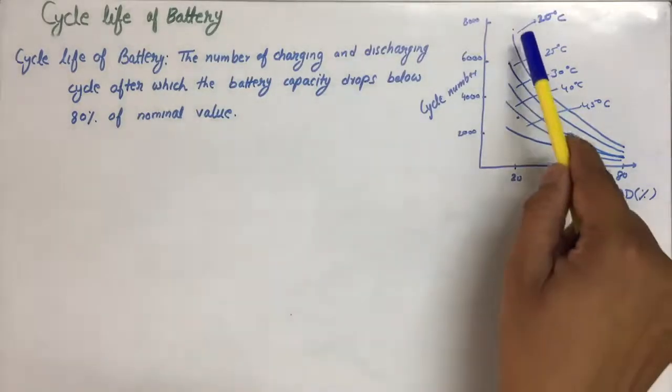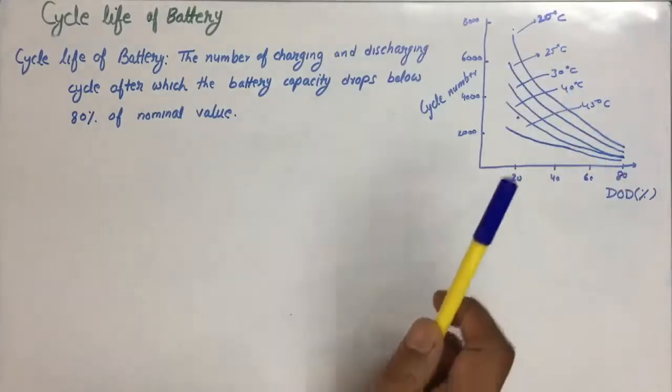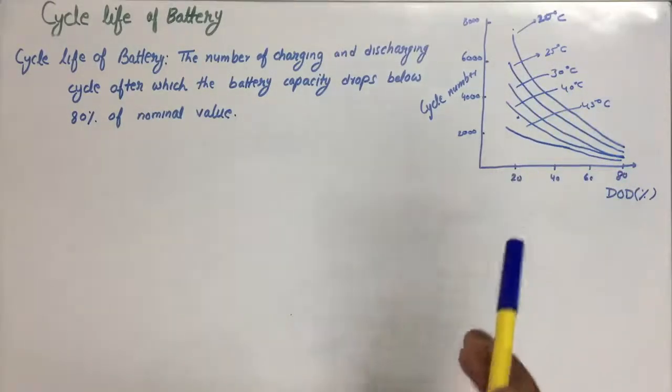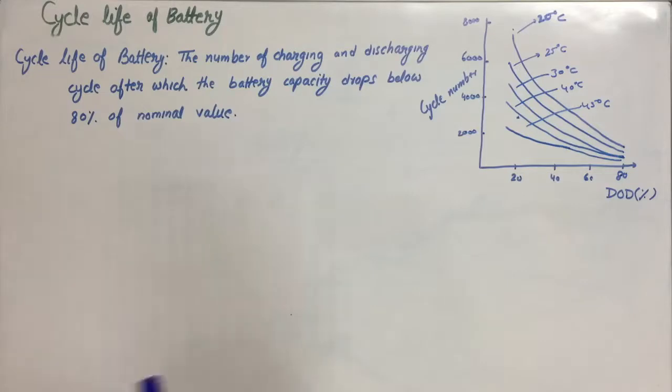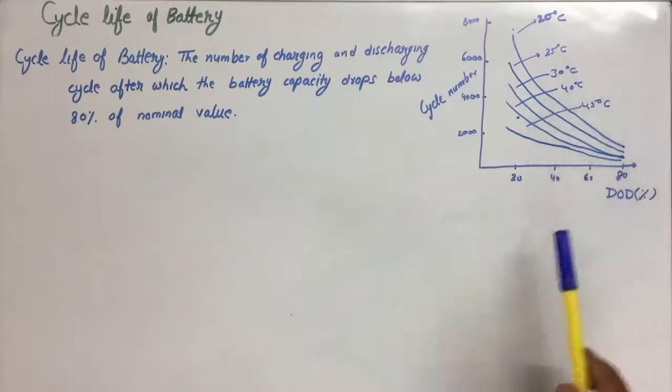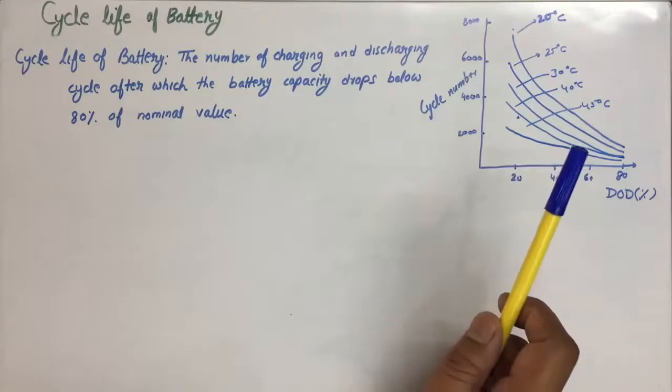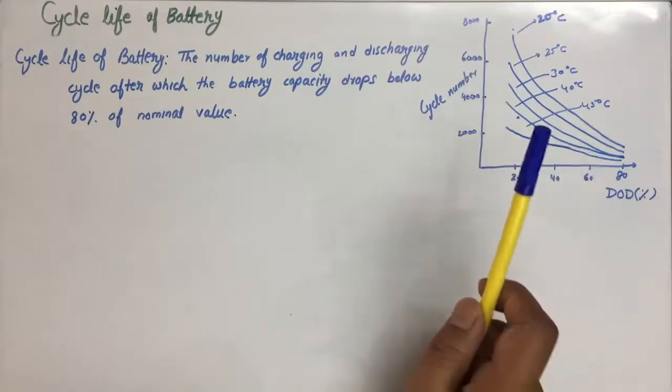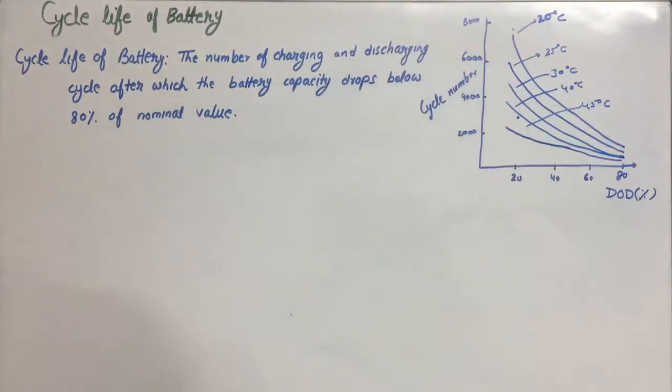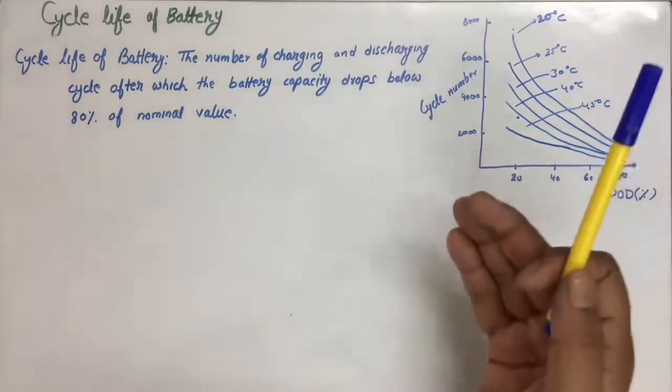At lower temperature, battery overheating should be strictly controlled so that overheating cannot be there. As we find, when temperature is increasing, the cycle number decreases. So overheating can be strictly controlled and overheating can occur due to overcharging.